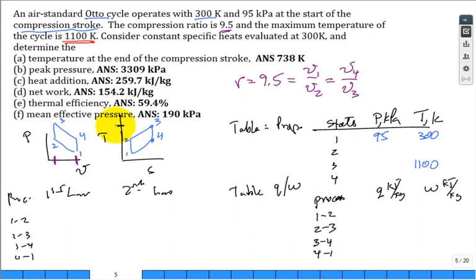Consider constant specific heats at 300 Kelvin. You can go to table A-20 and you can look up if you need it: c_v = 0.718 kilojoules per kilogram Kelvin, c_p if you need it (we don't for this problem), and k = 1.4.